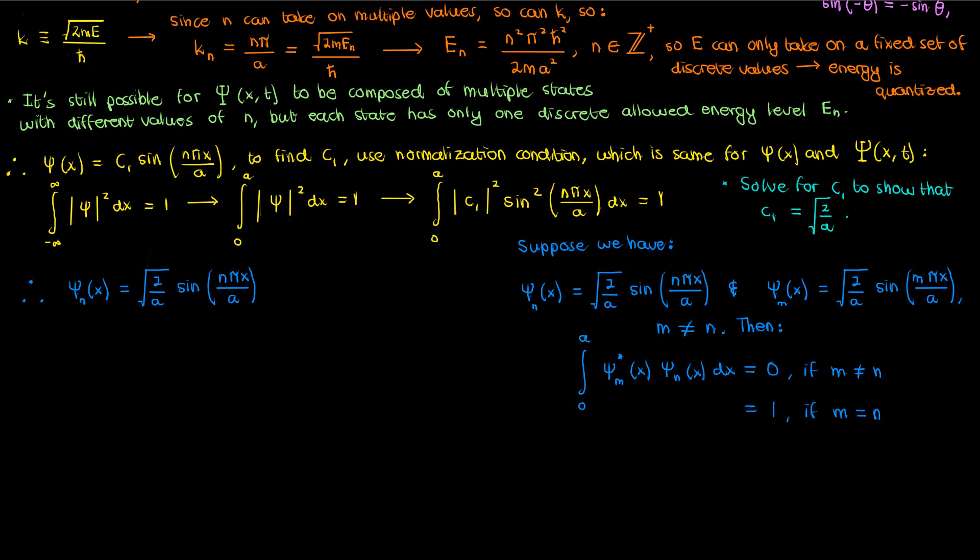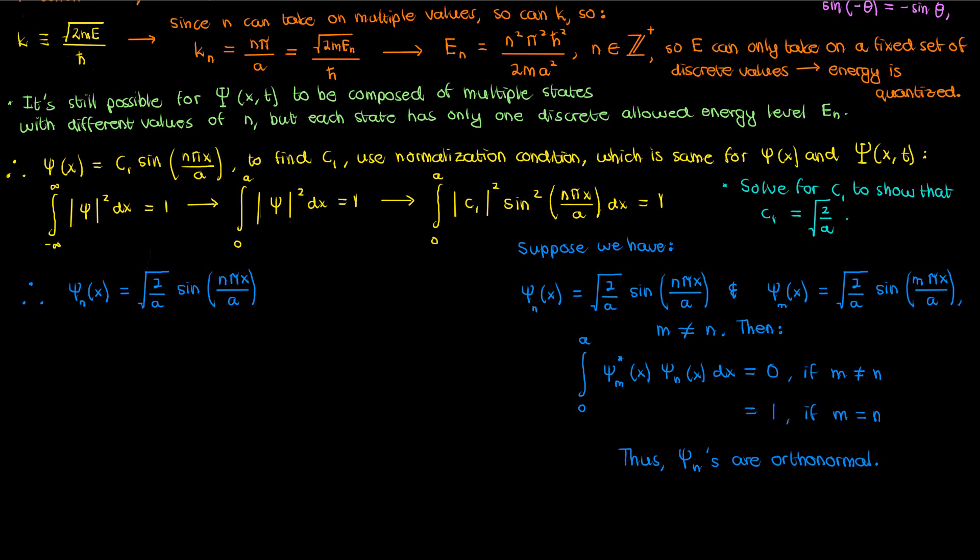I invite you to verify this property yourself. I won't do it here because it's a bunch of computations that won't add much to your learning, but this property is special because it means that the solution small psi are orthonormal. They're orthogonal to each other which means that if we integrate the product of one's conjugate solution with another solution that correspond to different integer values m and n, then the integral of that product will be 0, and they're also normalized which means that the magnitude squared of a particular solution is equal to 1, and that's why they're orthonormal.